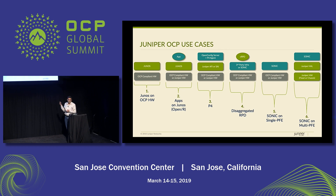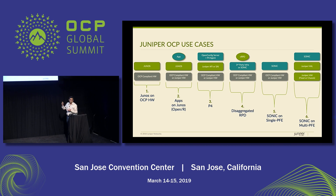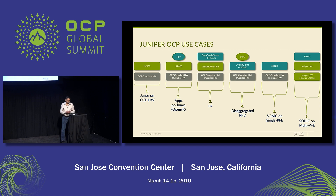We start off with being able to run Junos on OCP hardware — this is the simplest use case. If you look at here from a pictorial point of view, all the green boxes are the applications that Juniper brings to bear. The blue ones are customer applications. In addition, we are also able to run third-party applications on Juniper software.